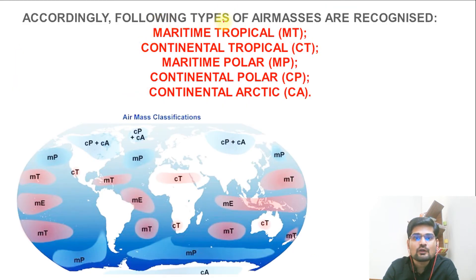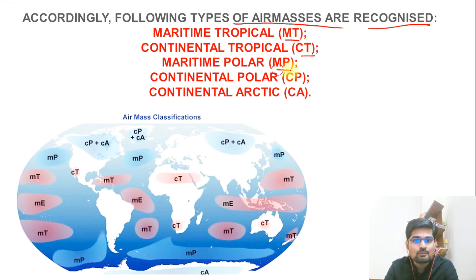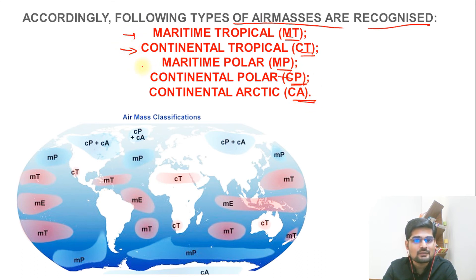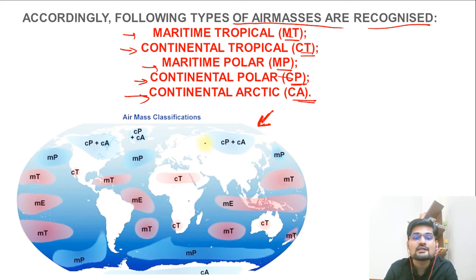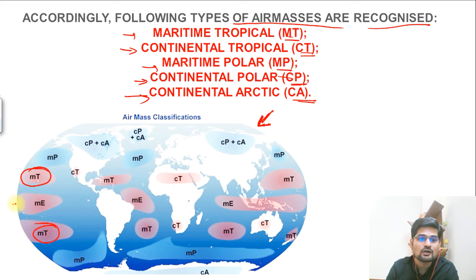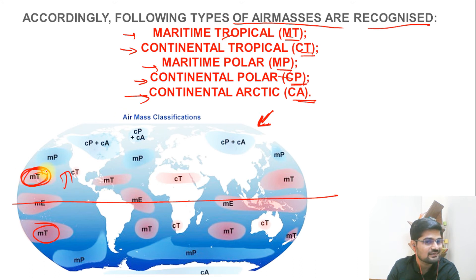Accordingly, the following types of air masses are recognized on Earth: MT (maritime tropical), CT (continental tropical), MP (maritime polar), CP (continental polar), and CA (continental arctic) — five types in total. Looking at the world map, MT is located on both sides of the equator across oceanic areas in the tropics. CT is found in continental areas in the tropics — the interior of the continents where you have landmasses in tropical latitudes.